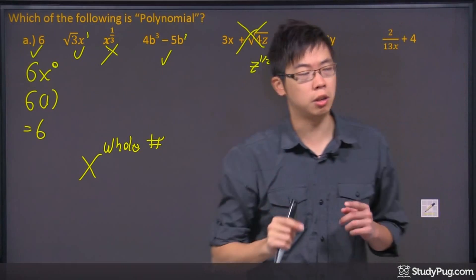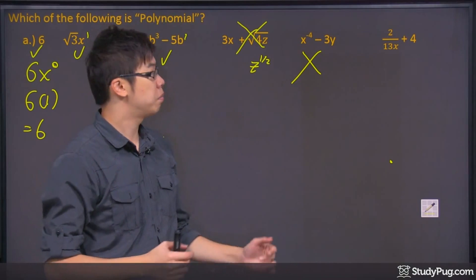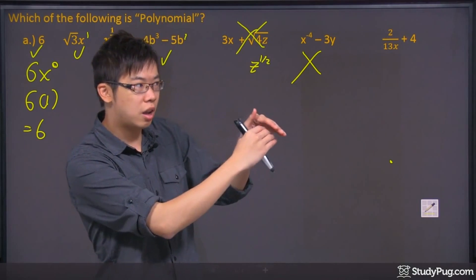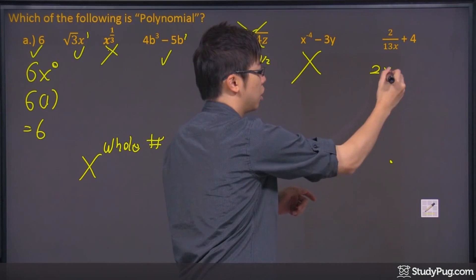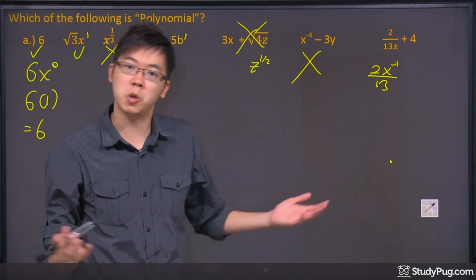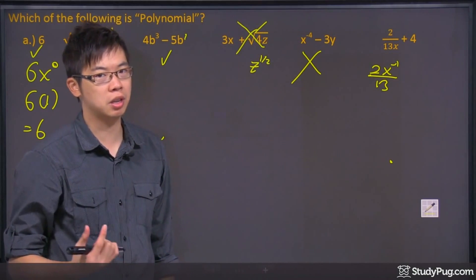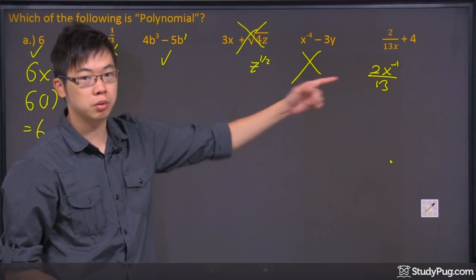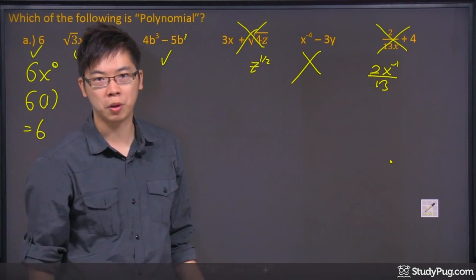The last one's a bit tricky, because you do see that's just x to the power of 1, right? But because it's actually at the denominator. So if you rewrite this, this x can be put to the top as an x to the power of negative 1. And we know that in order to be a polynomial, you cannot have the exponent as a negative for the variables. So in this case, this guy right here is not a polynomial.